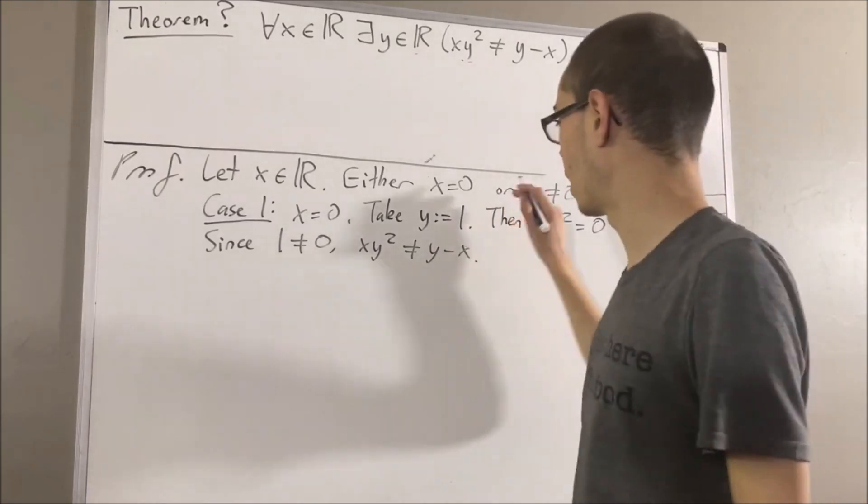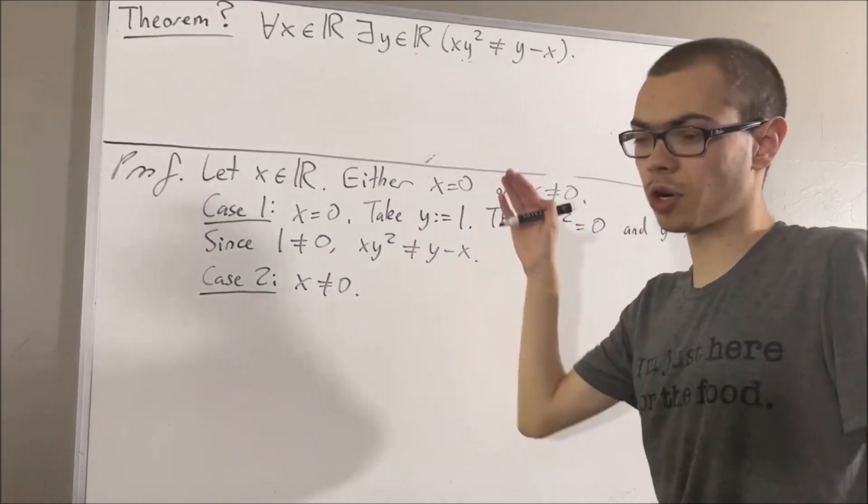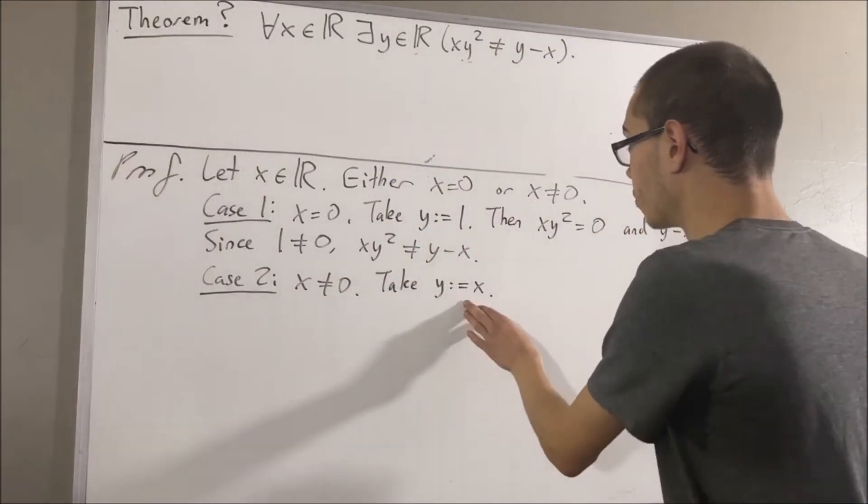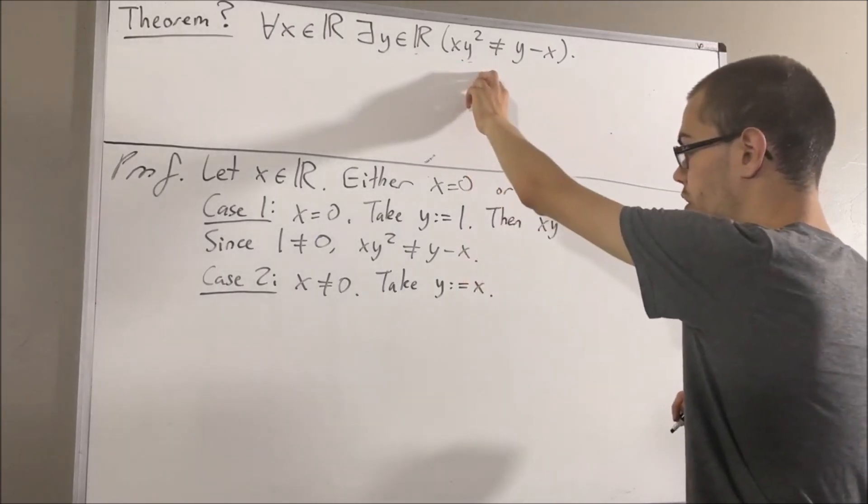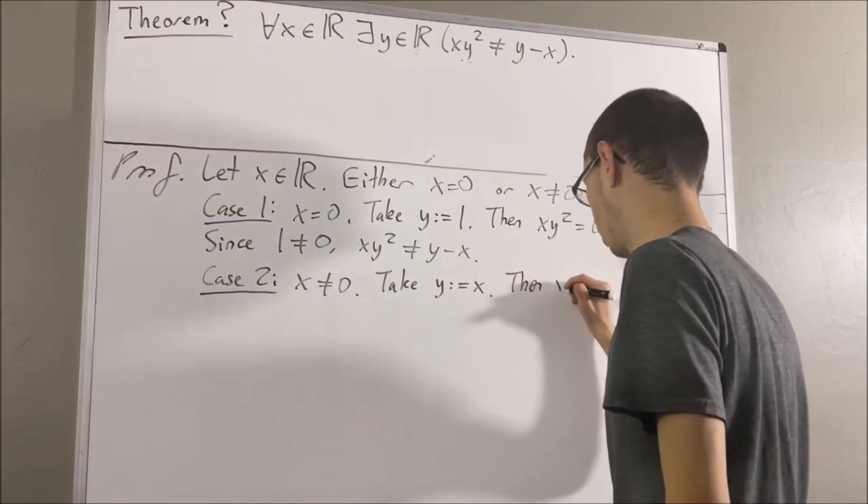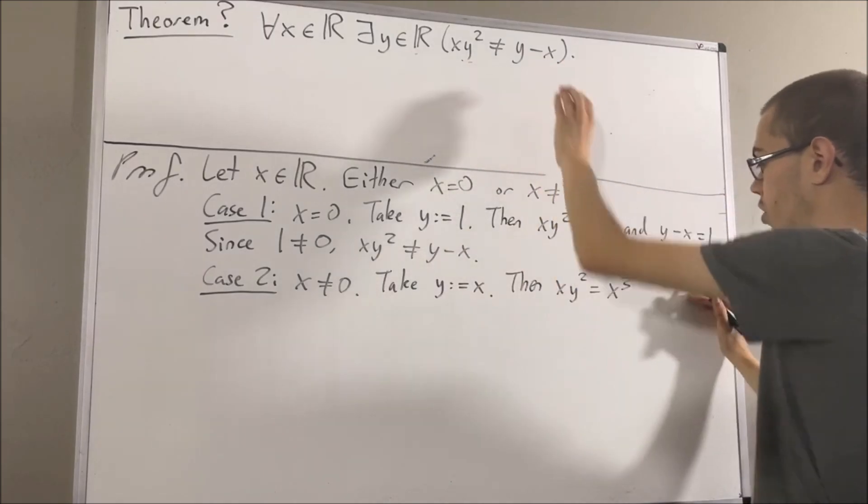Now let's move on to case two, where x is not equal to zero. Now in the case where x is not equal to zero, we took y to be x. Now if we do this, well, then the left-hand side is really just going to be x times x squared, which is x cubed, and y minus x is just x minus x, which is zero.